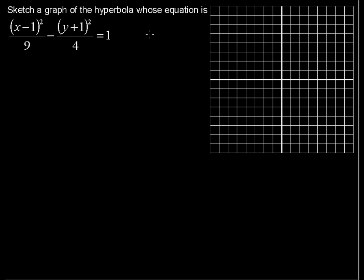Sketch a graph of the hyperbola whose equation is (x - 1)² over 9 minus (y + 1)² over 4 equals 1.